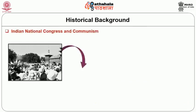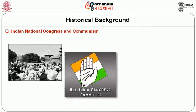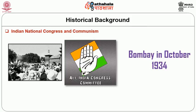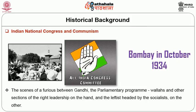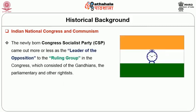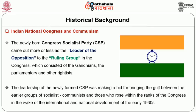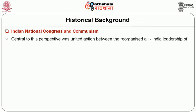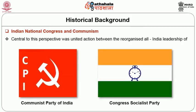The meeting of the All India Congress Committee held in Patna in May 1934, and the following All India session of the Indian National Congress held in Bombay in October 1934, became the scenes of a feud between Gandhi, the parliamentary programme Wallas, and other sections of the right leadership on the one hand, and the leftists headed by the socialists on the other. The newly born Congress Socialist Party came out more or less as the leader of the opposition to the ruling group in the Congress, which consisted of the Gandhians, the parliamentarians, and the other rightists. The leadership of the newly formed CSP was making a bid for bridging the gulf between earlier groups of socialist communists and those who rose within the ranks of the Congress in the wake of the international and national developments of the early 1930s.